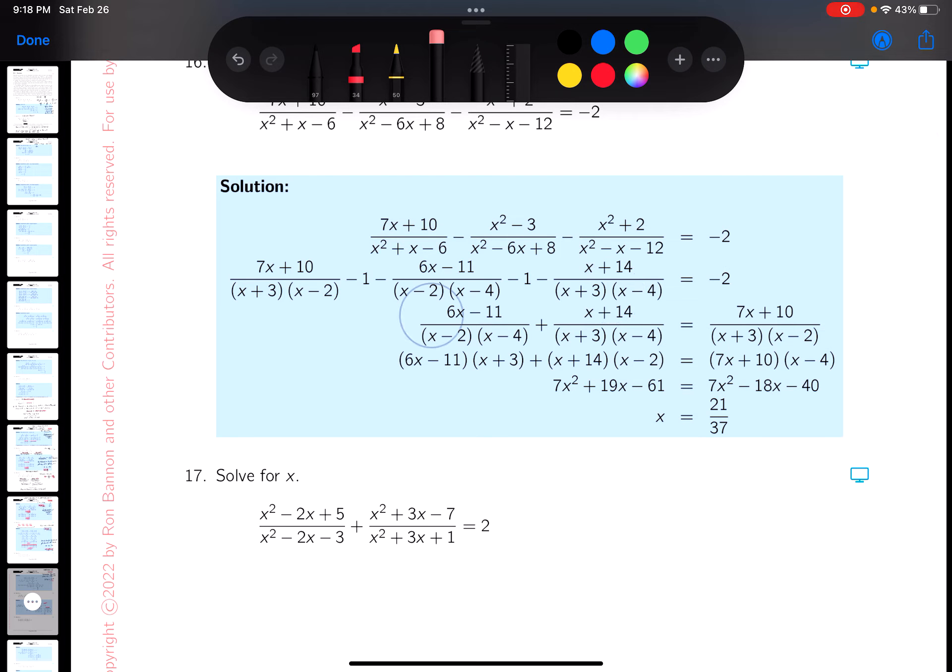So let me write the LCD down, looking at it, and the LCD is, let's see, let's take a look at this. x + 3. I'm going to highlight that for you. I'm going to put down x - 2. I'm going to highlight that for you. And there's another factor, which is x - 4. I'm going to highlight that for you. Let's multiply.